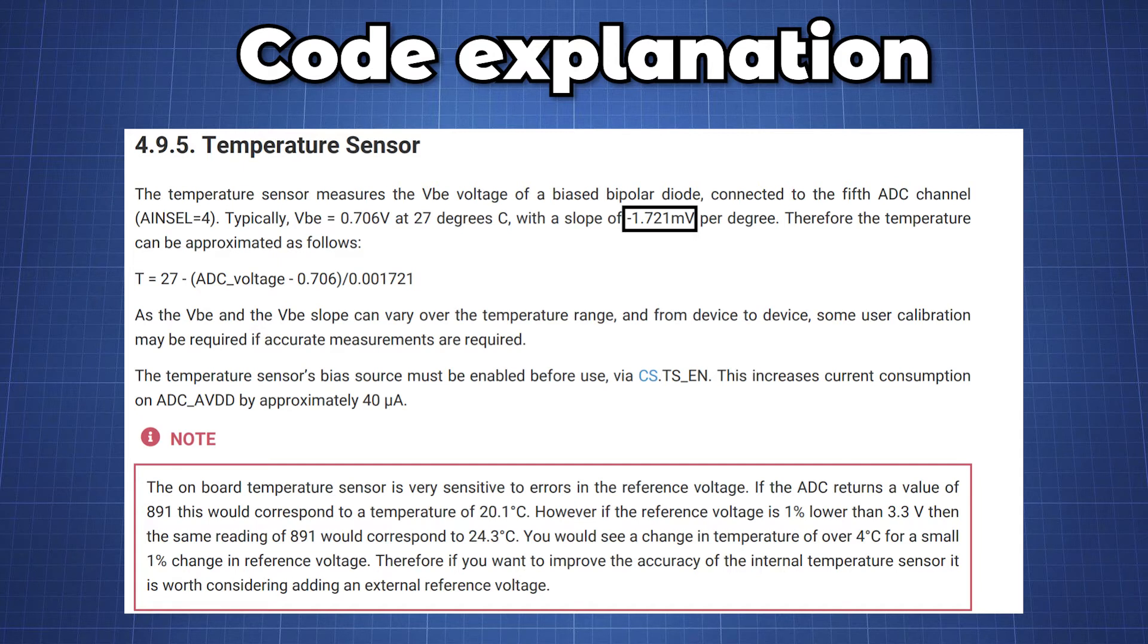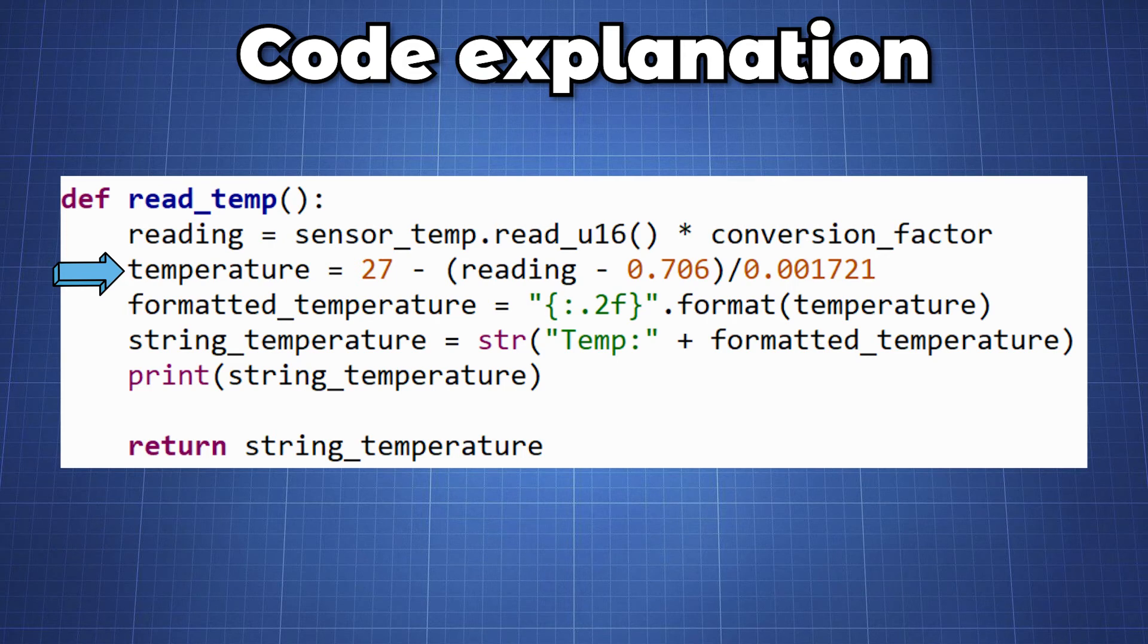The first step in converting the 16 bit temperature is to convert it back to volts which is done based on the 3.3 volt maximum voltage used by the picker board. With this conversion the variable reading holds a value between 0 and 3.3.